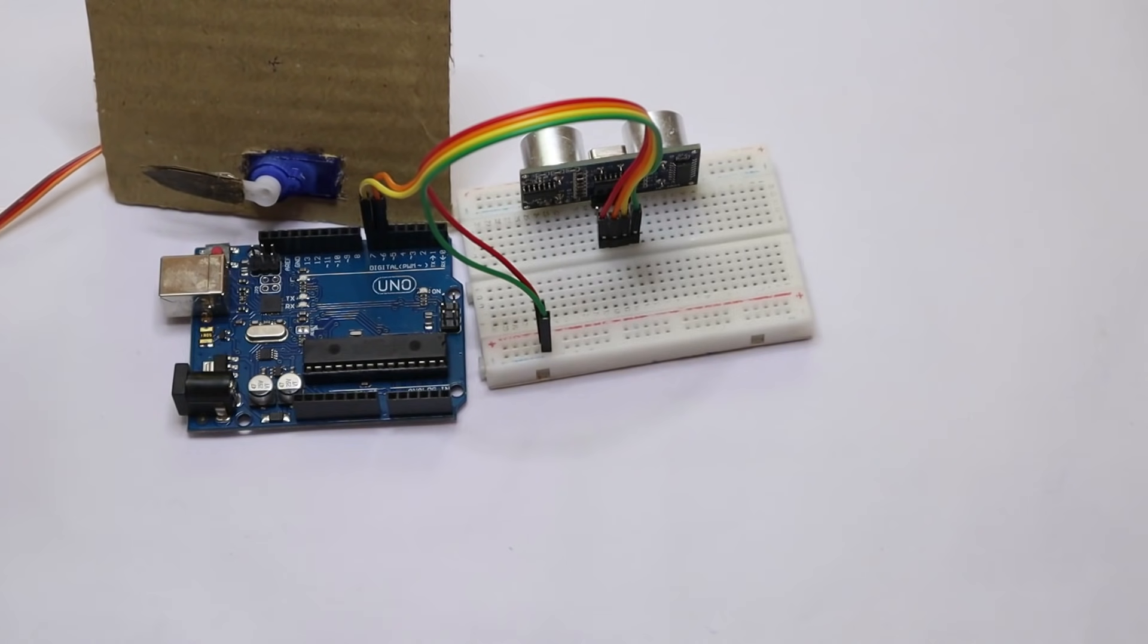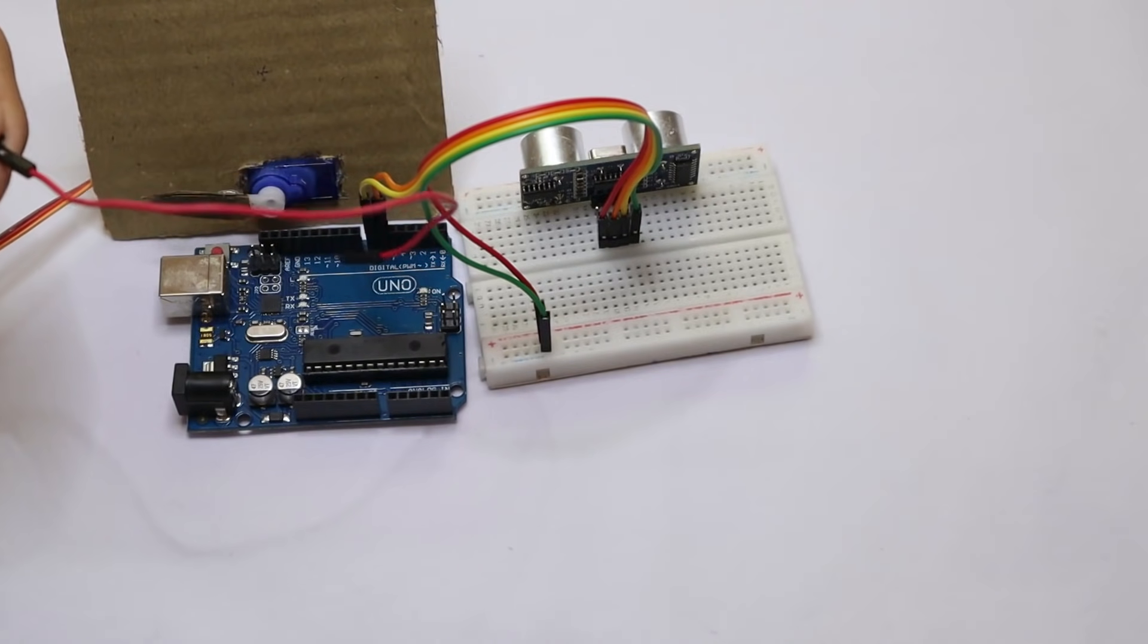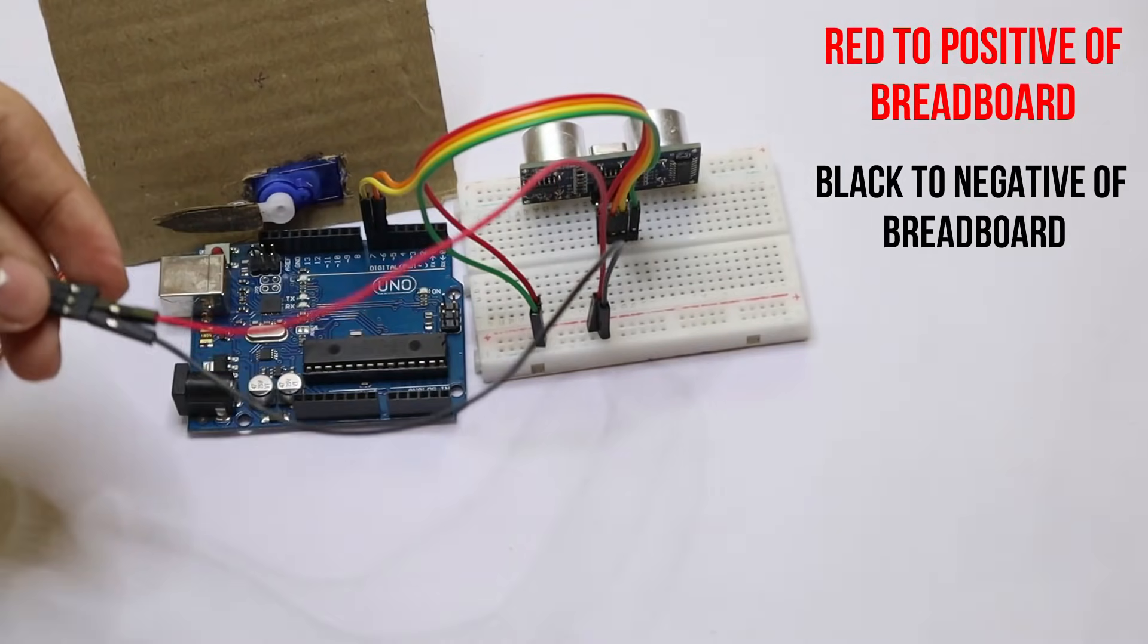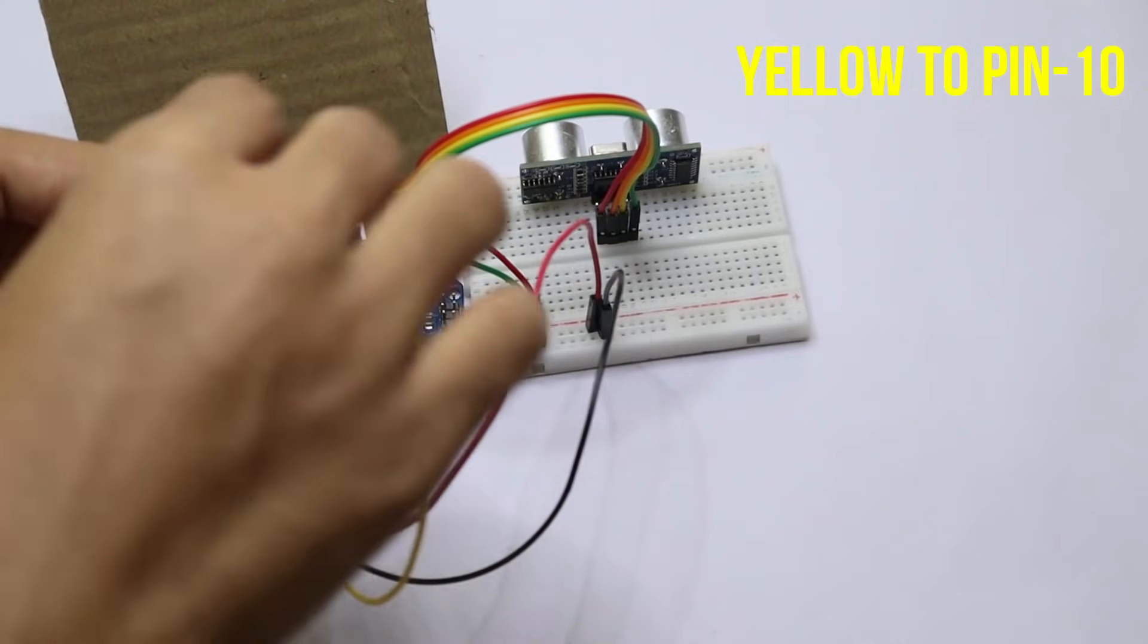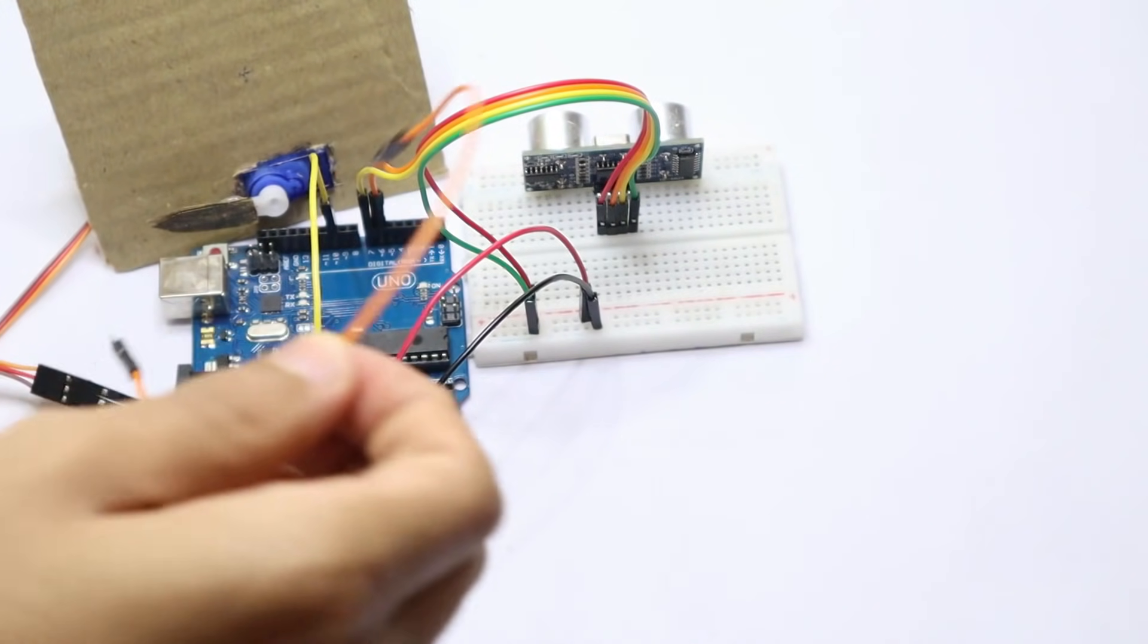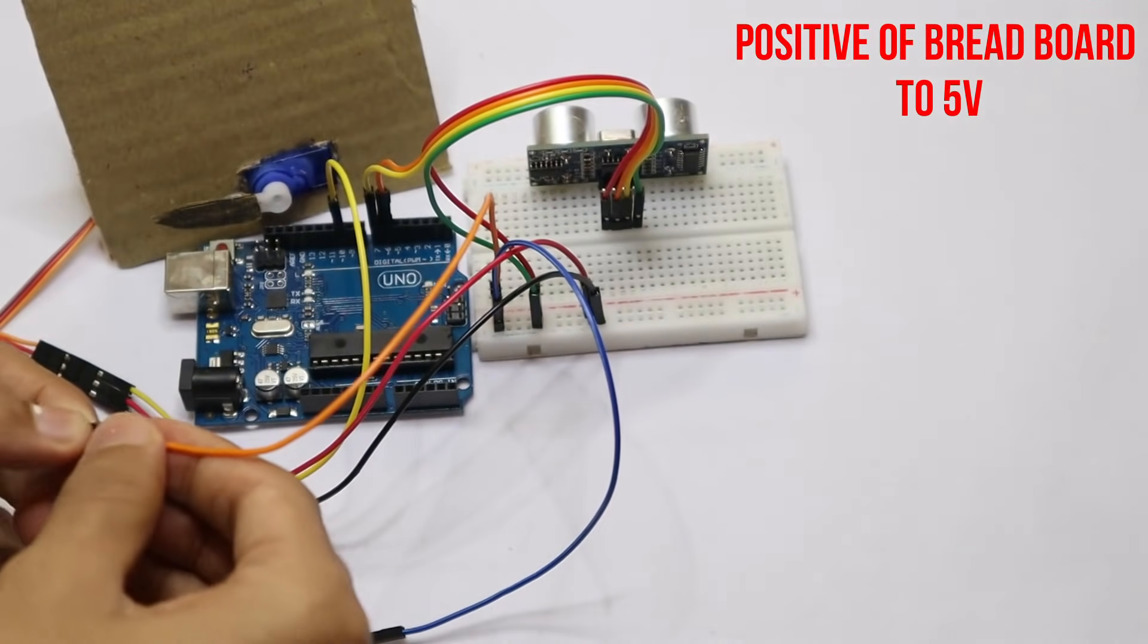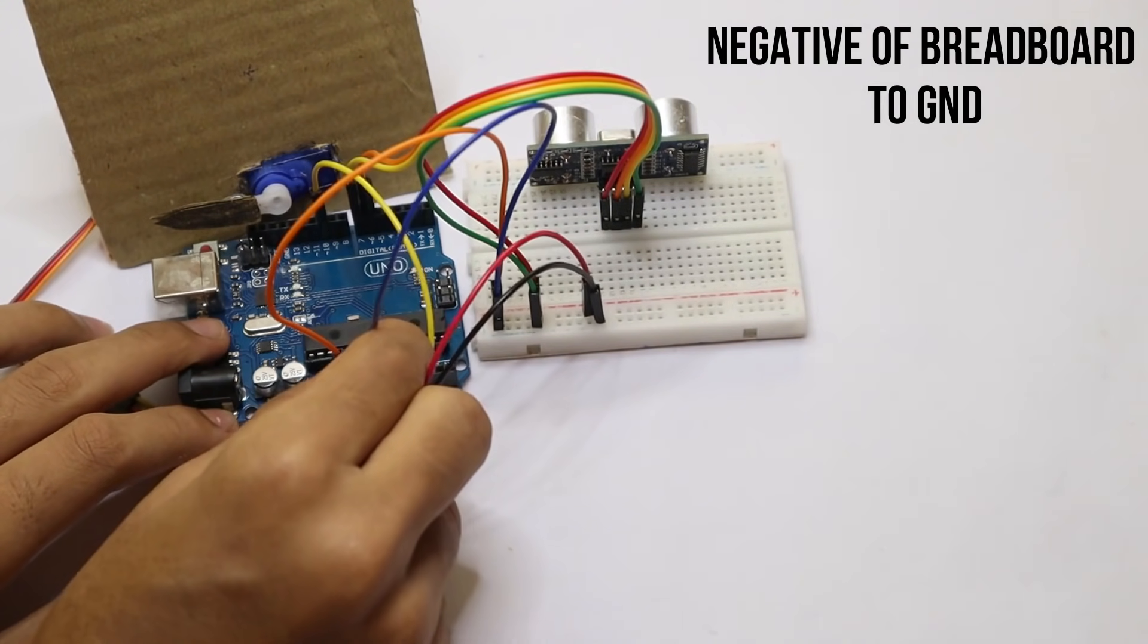Take the negative. Now take your servo and connect the positive and the negative to the breadboard positive and negative. Now connect the output to pin 10 like that. Now connect any two wires, the positive and the negative. Now positive to the 5 volt and negative to the ground.